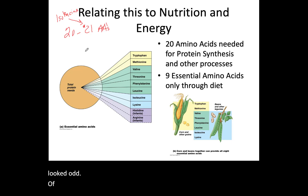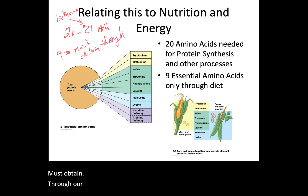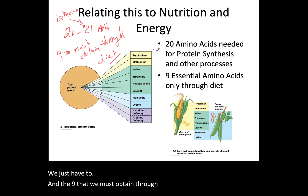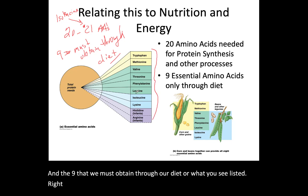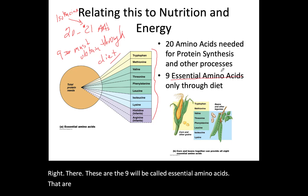Of those 20 to 21 amino acids, nine of them we must obtain through our diet. The nine that we must obtain through our diet are the nine we call essential amino acids, which are only acquired through diet.